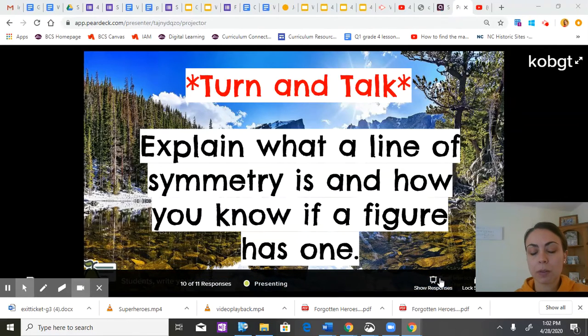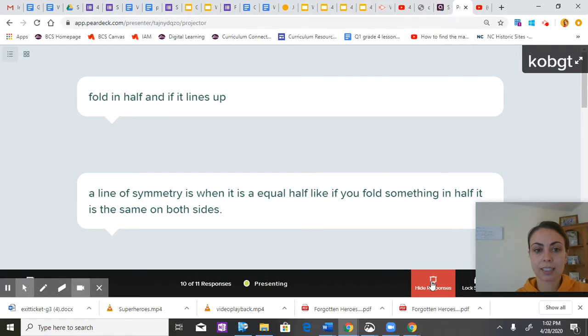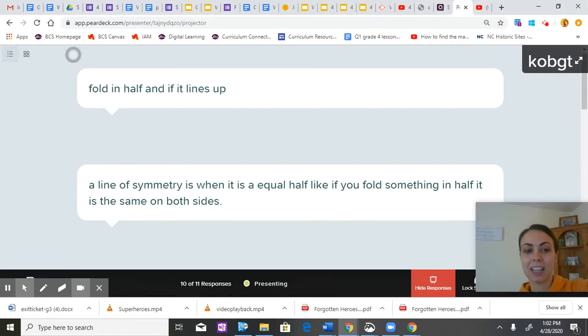Some of the things that we talked about: a line of symmetry is a line that goes down the middle and creates a mirror image of both sides. Here's what some of the classmates said: fold in half and if it lines up it's a line of symmetry.